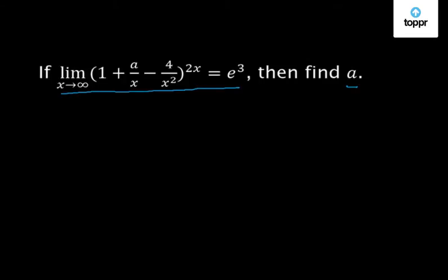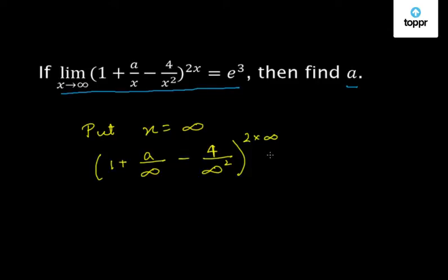Let us solve this problem. If we put the value of x equal to infinity in this function, we get (1 + a/∞ - 4/∞²)^(2×∞). This is equal to (1 + 0 - 0)^∞, which equals 1^∞.